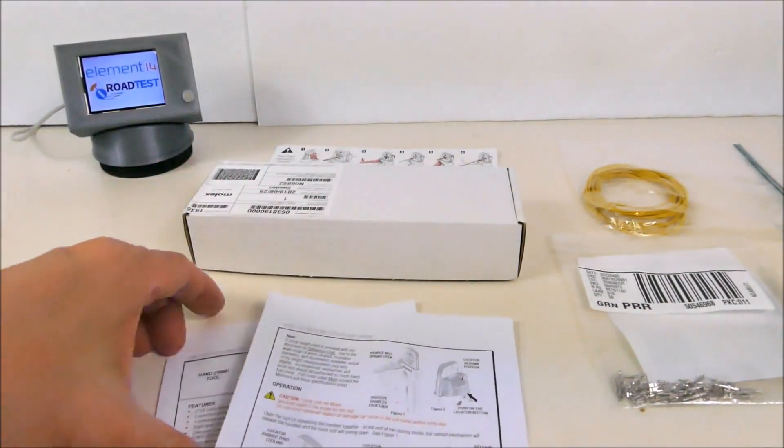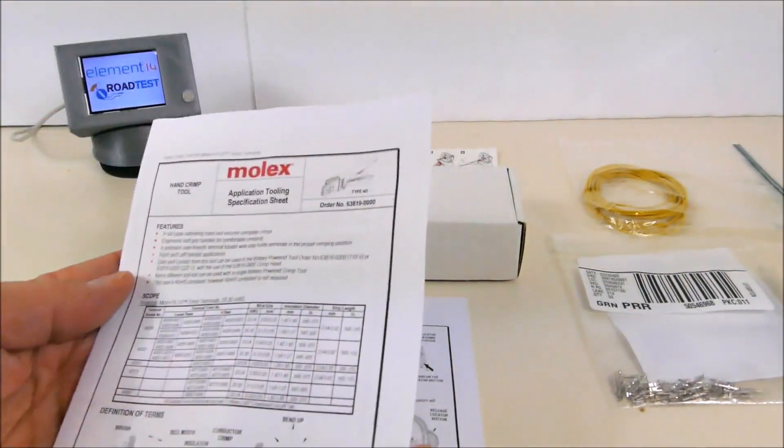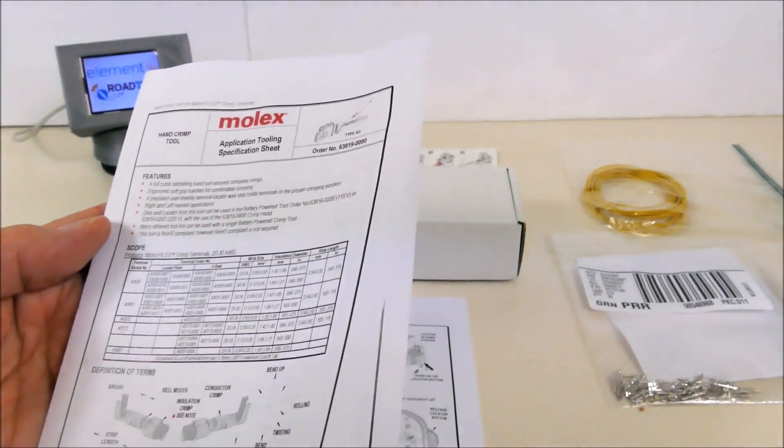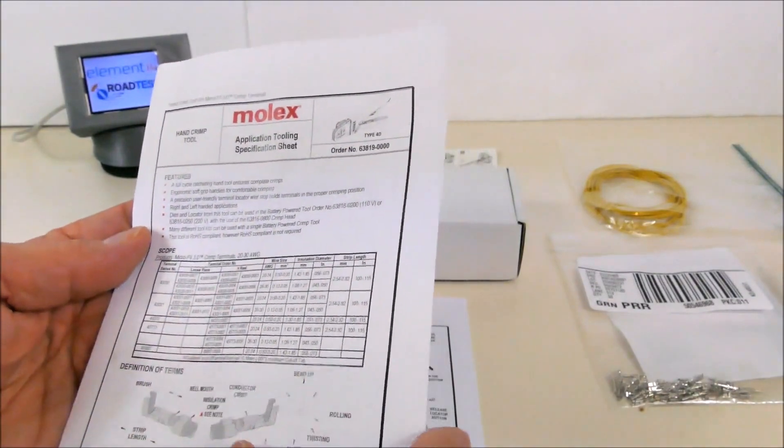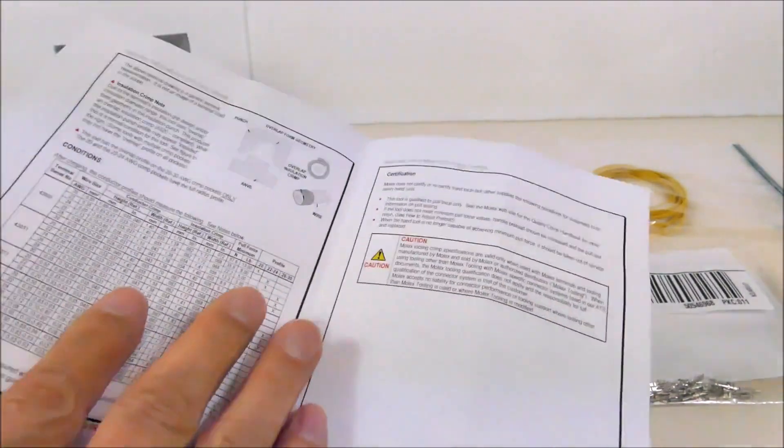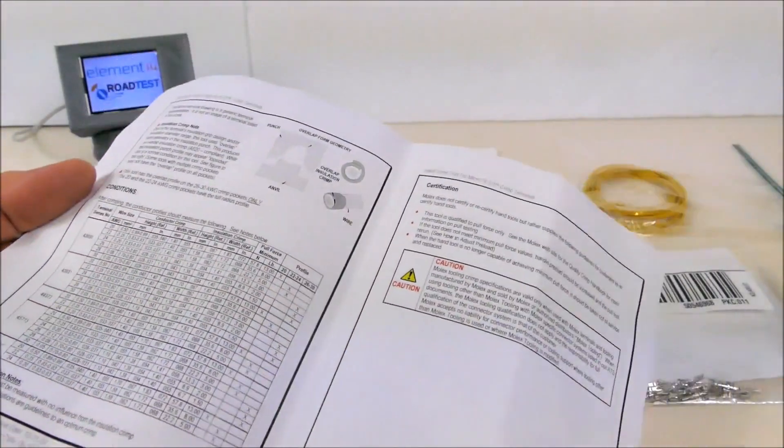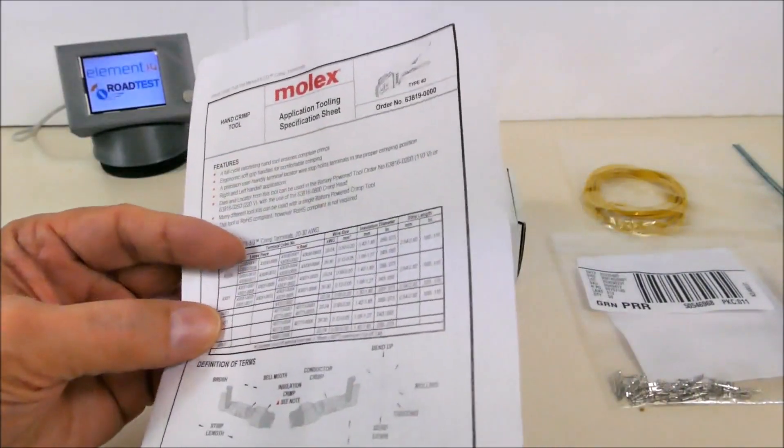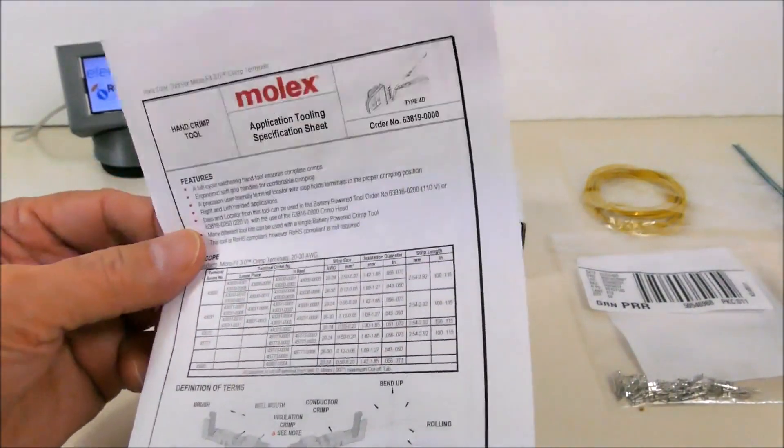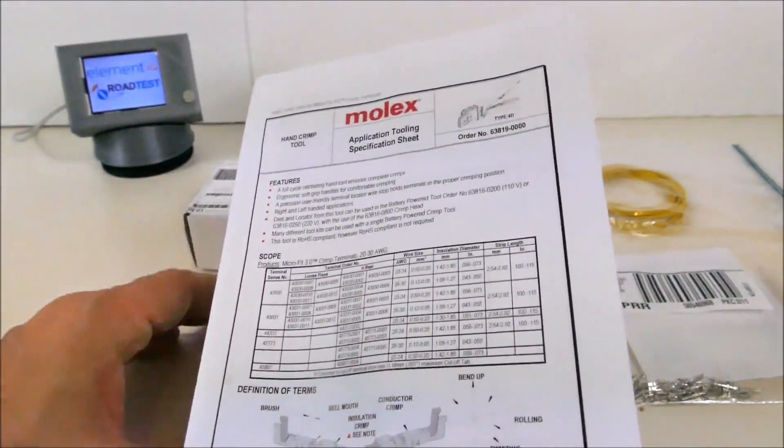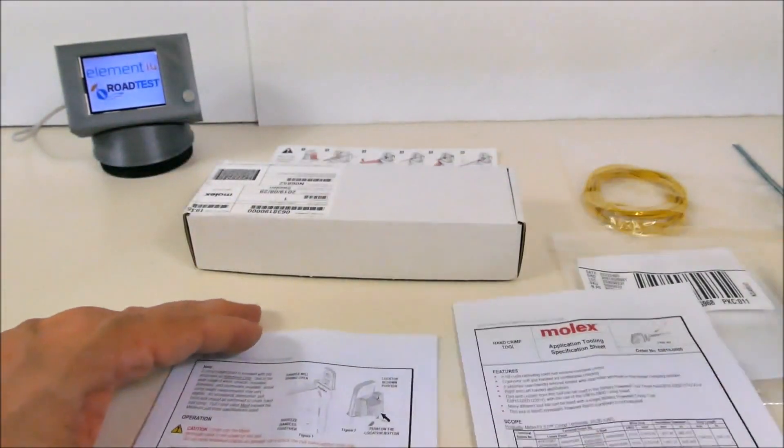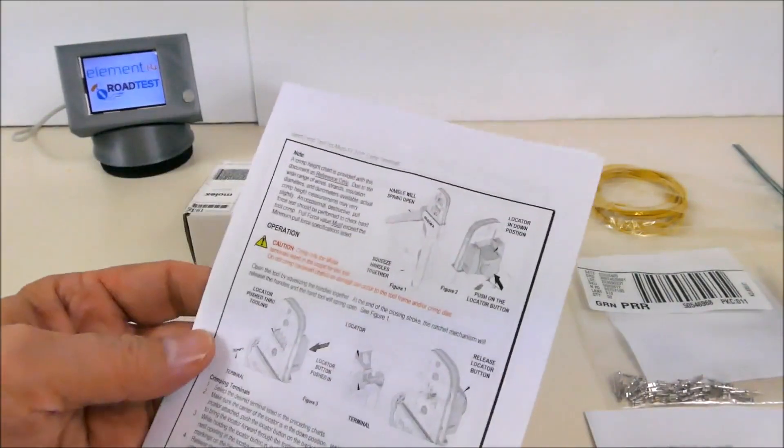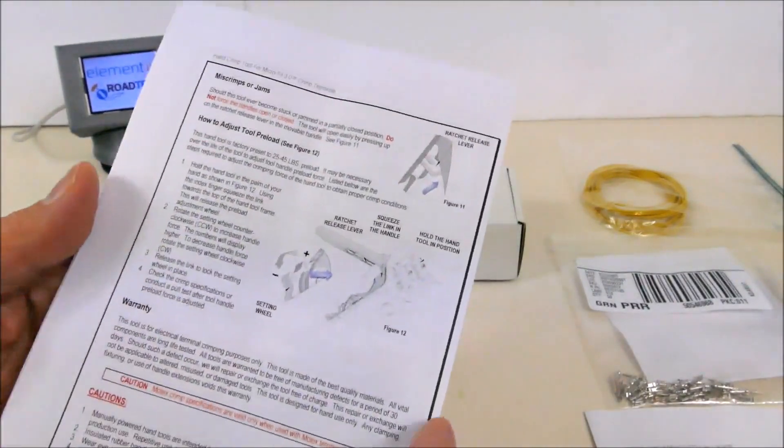Another document outlines all the different part numbers that this device can crimp, so that's pretty useful because it's not always obvious with the number of tools and connectors around what matches to what.